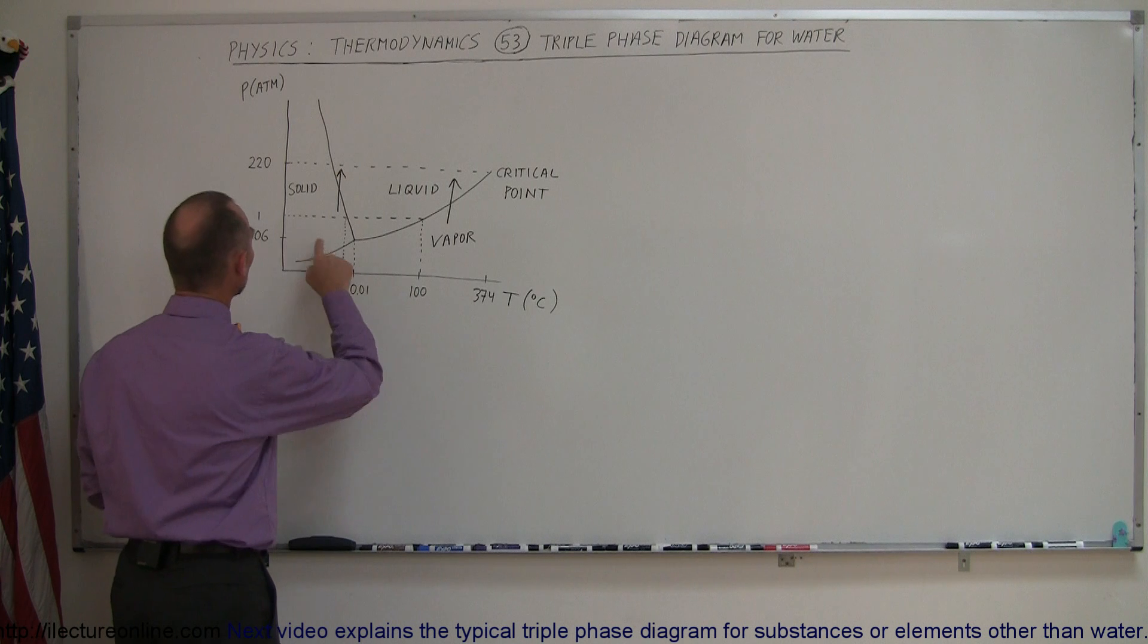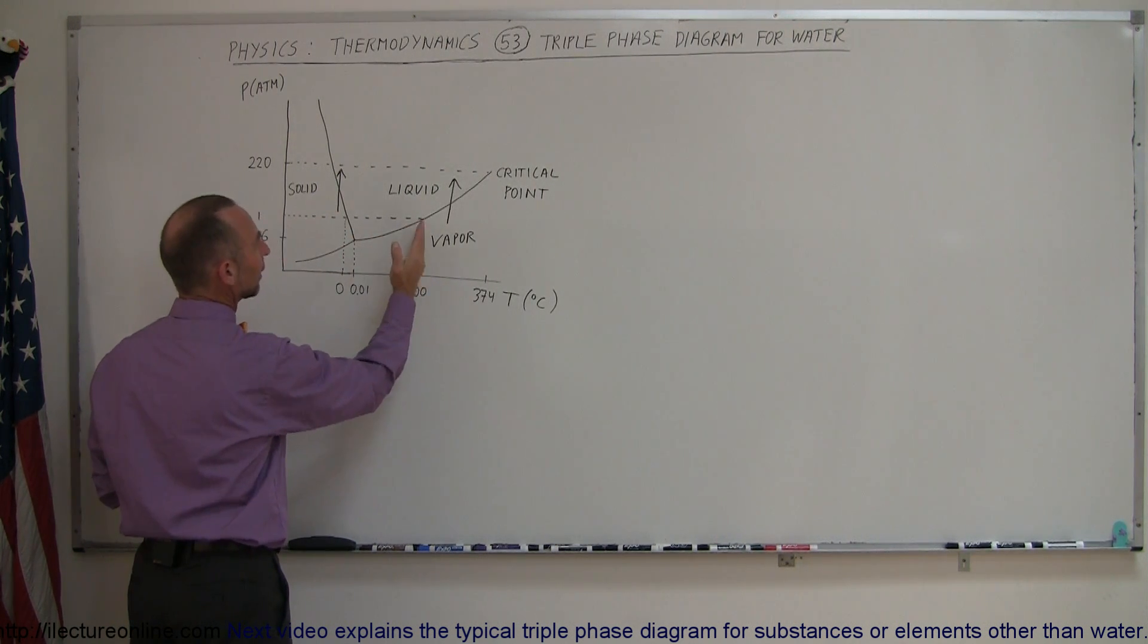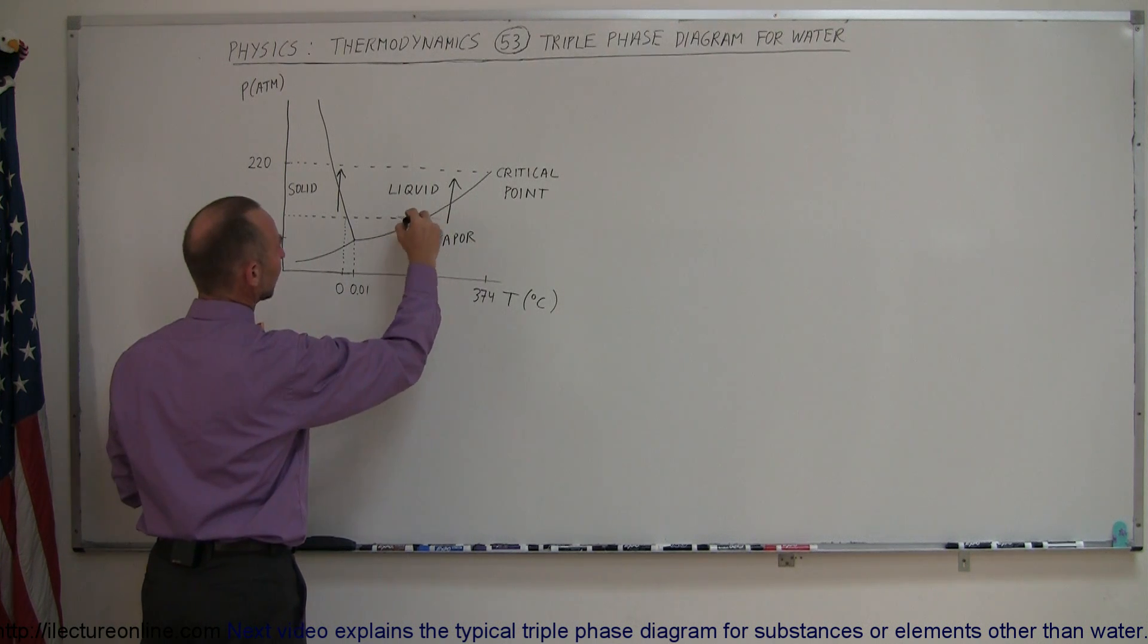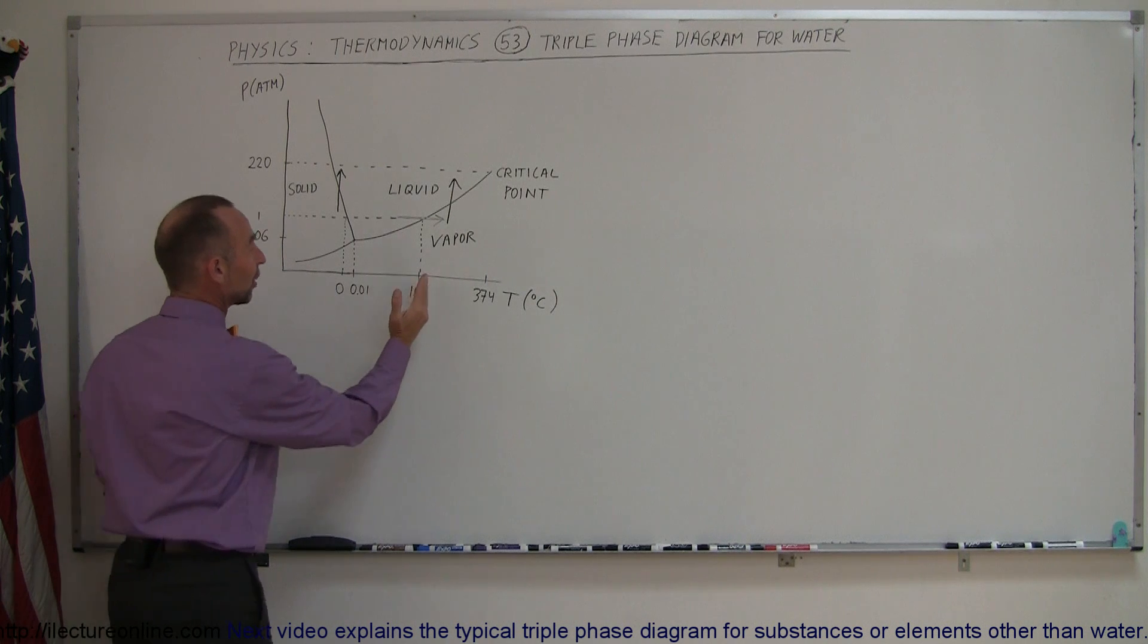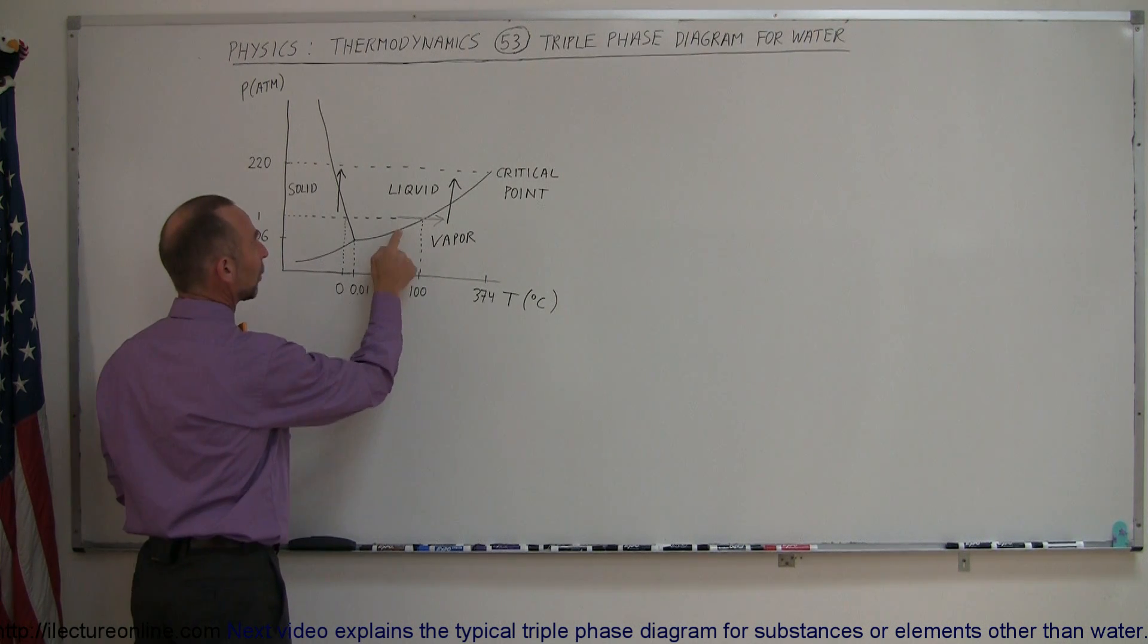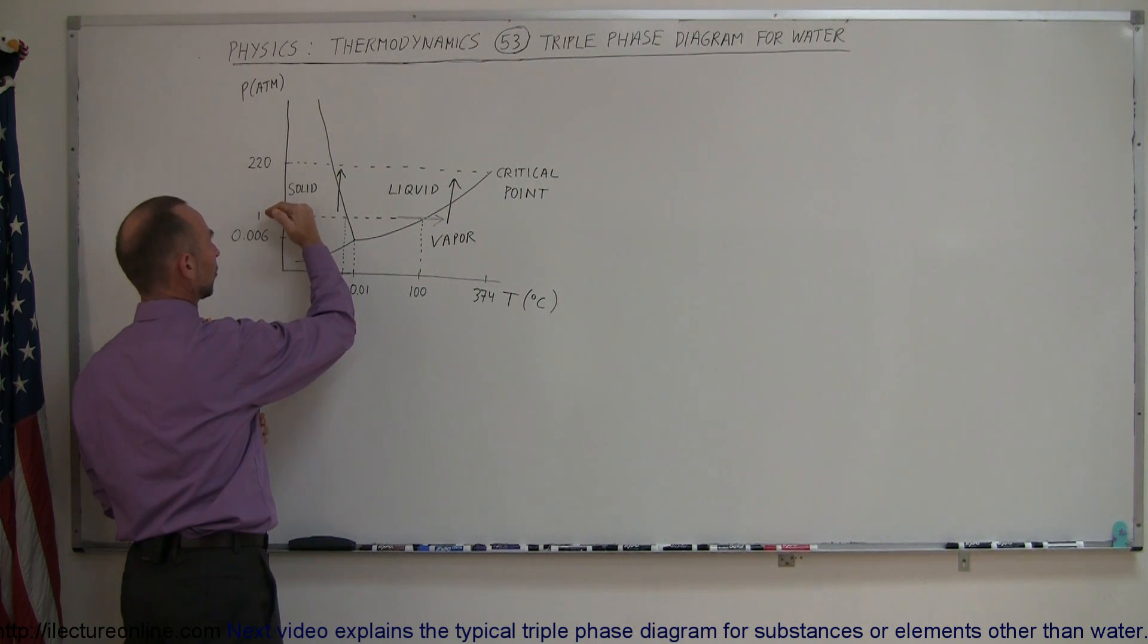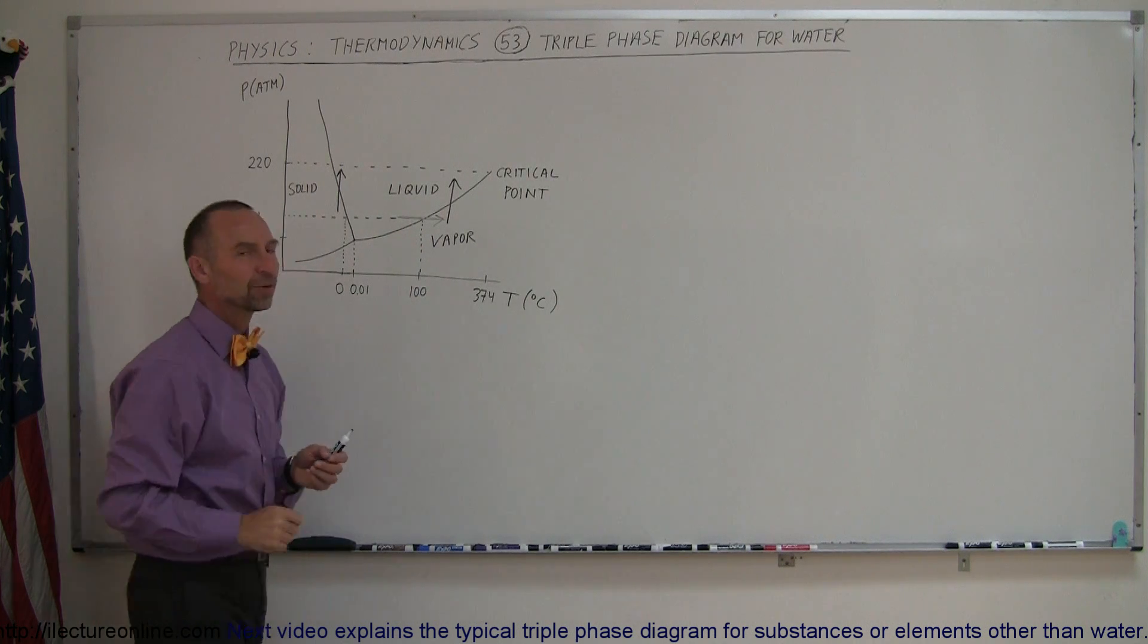Notice also that at one atmosphere of pressure, if you have liquid water and you go above 100 degrees centigrade, of course, what happens then is that the water will begin to boil and completely turn from liquid into vapor. And notice that if the temperature is less than 100 degrees centigrade, then water will not boil unless the pressure is lower. So when you go up in the mountains where the atmospheric pressure is less, then you can see that water will begin to boil at lower temperatures.